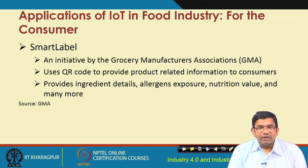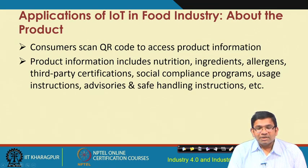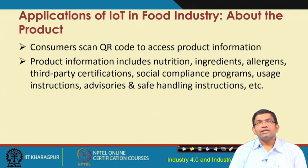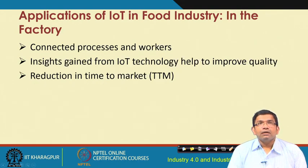For the consumer, SmartLabel is an initiative by the Grocery Manufacturers Association (GMA) that uses QR codes to provide product-related information to consumers. Consumers can scan the QR code to get details about a product, including ingredient details, allergen exposure, nutrition value, third-party certification, social compliance programs, usage instructions, advisories, and safe handling instructions.